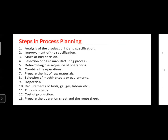The twelfth step is cost of production — after completion of your production, what is the total cost? The thirteenth step is to prepare the operation sheet and route sheet. The operation sheet notes the time each piece is loaded on a machine and the transfer time between machines. The route sheet explains the sequence of your process.